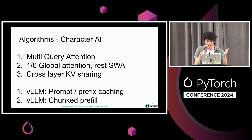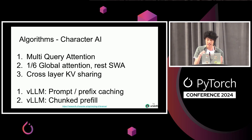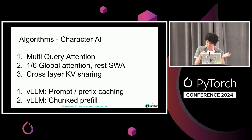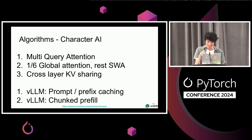Character AI released a blog post showing how they made inference faster: using multi-query attention, 1.6 global attention plus the rest sliding window, cross-layer KV sharing, and VLLM. Everyone should use VLLM — they have prompt caching and prefix caching. Claude said they have prefix caching, but VLLM already had it, along with chunked prefill. Definitely use VLLM.